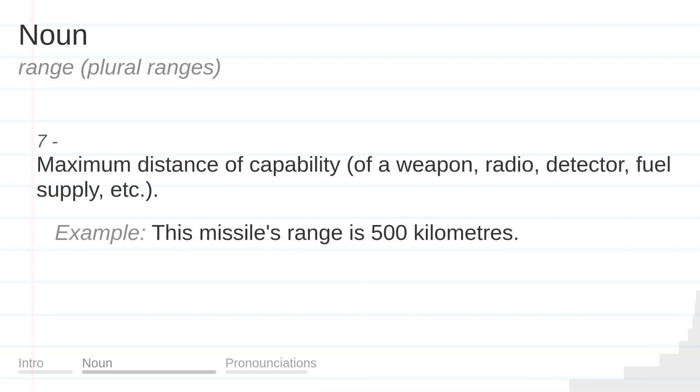Maximum distance of capability of a weapon, radio, detector, fuel supply, etc. Example: This missile's range is 500 kilometers.